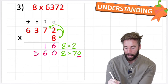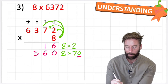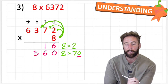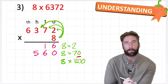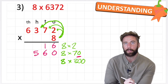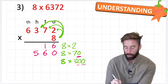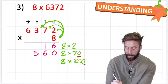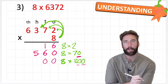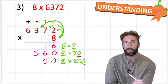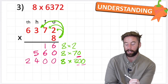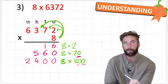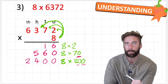Now I can do the next step: 8 times 300. How many placeholders are in 300? 1, 2. So I put those in — 1, 2 — and then just do 8 times 3, which is 24. Put that in place and therefore my answer to 8 times 300 is 2,400.